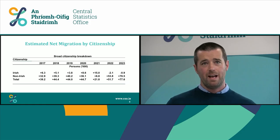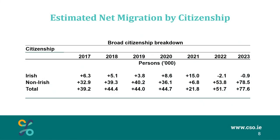This table looks at estimated net migration by citizenship for 2017 to 2023, separating Irish and non-Irish citizens. Focusing on the two most recent years, 2022 and 2023, we can see low levels of negative net migration for Irish citizens: 2,100 in 2022 and 900 in 2023. For non-Irish citizens we can see large levels of positive net migration: 53,800 in 2022 and 78,500 in 2023. This means total net migration was above 50,000 for 2022 and above 75,000 for 2023, larger than any other year presented in this table.